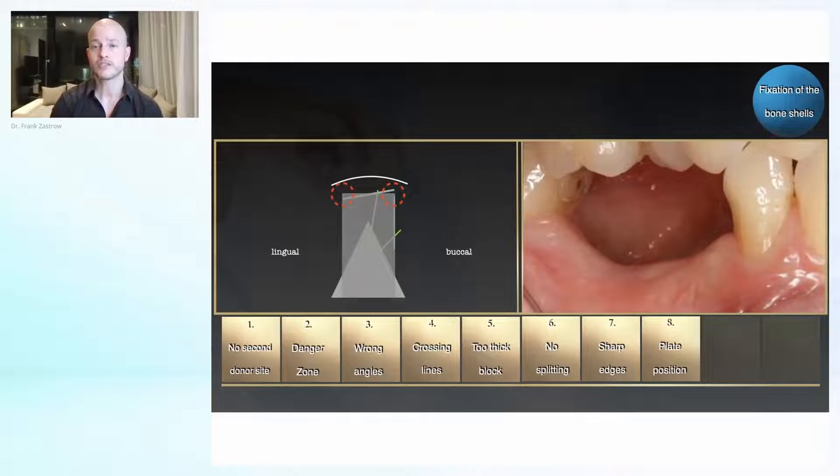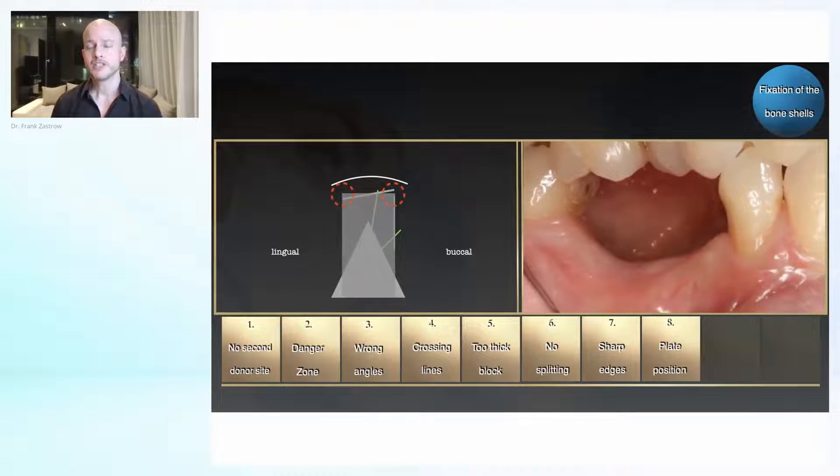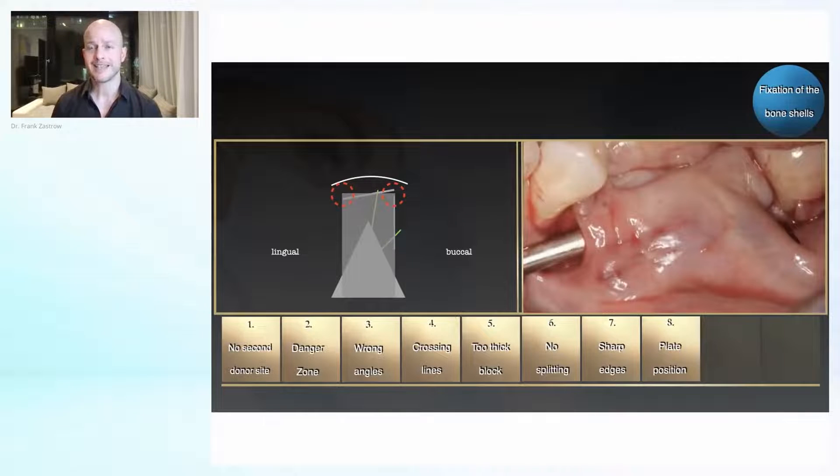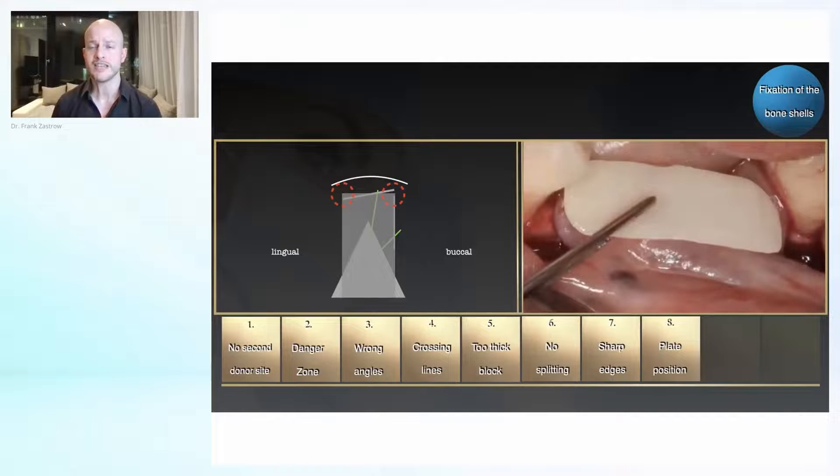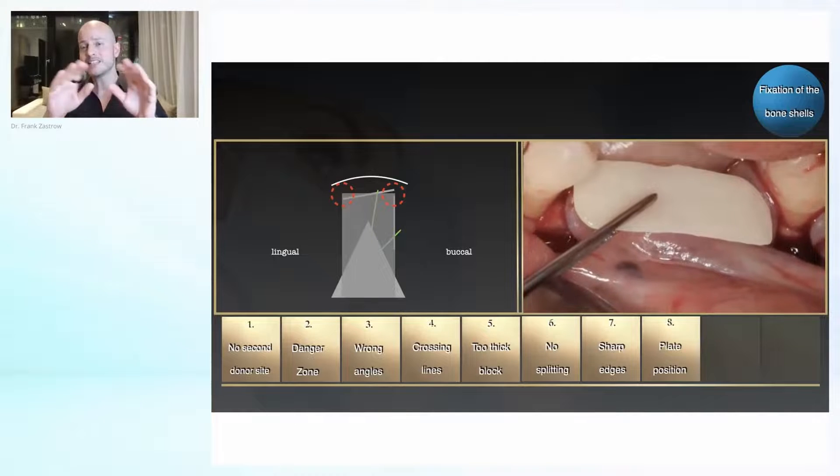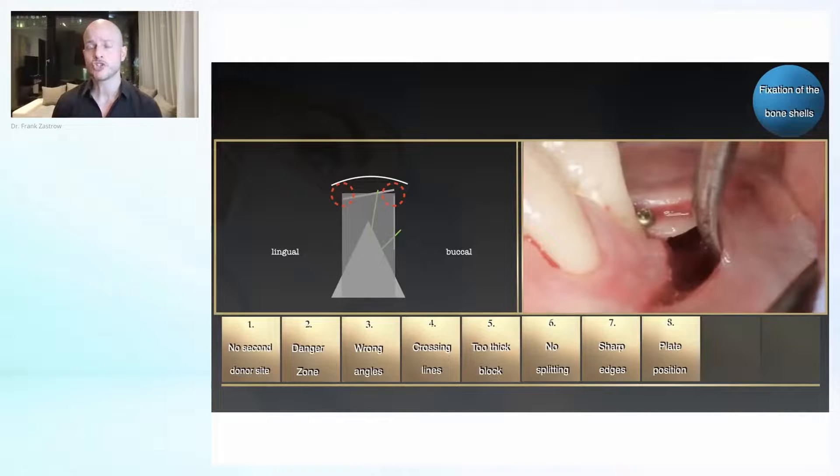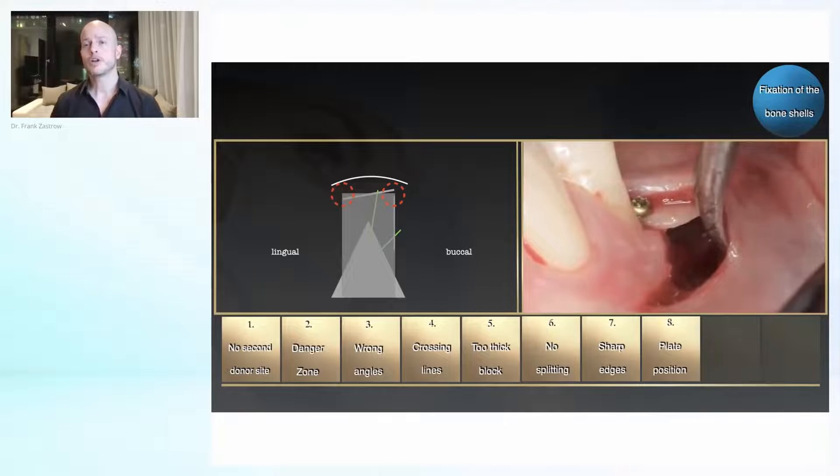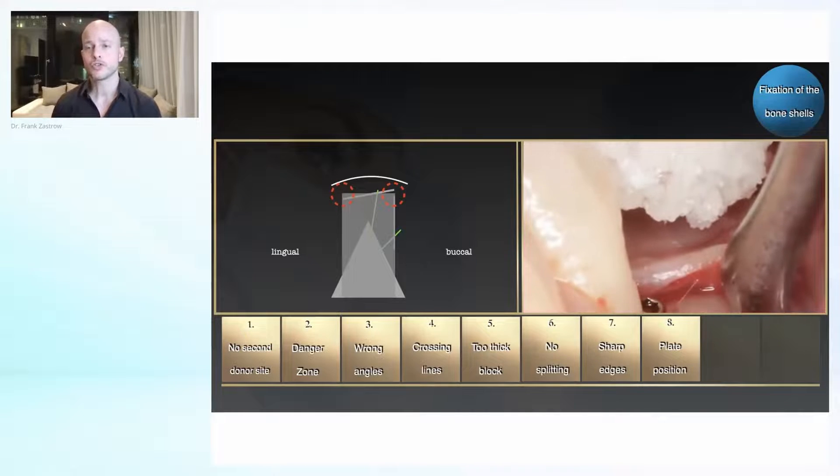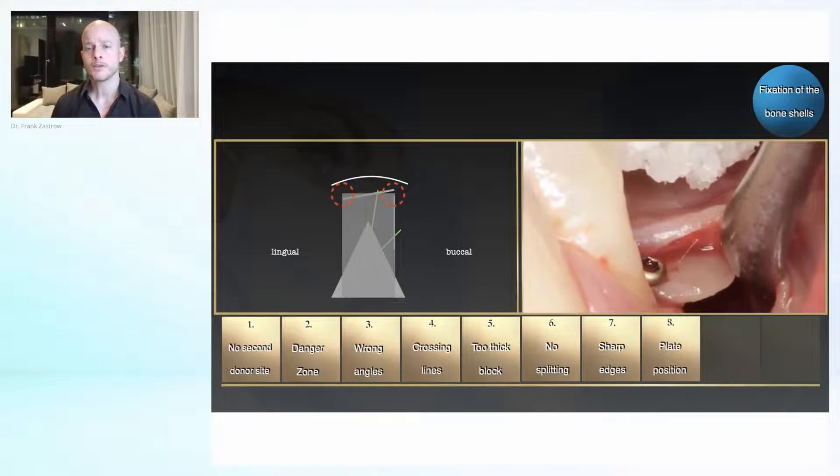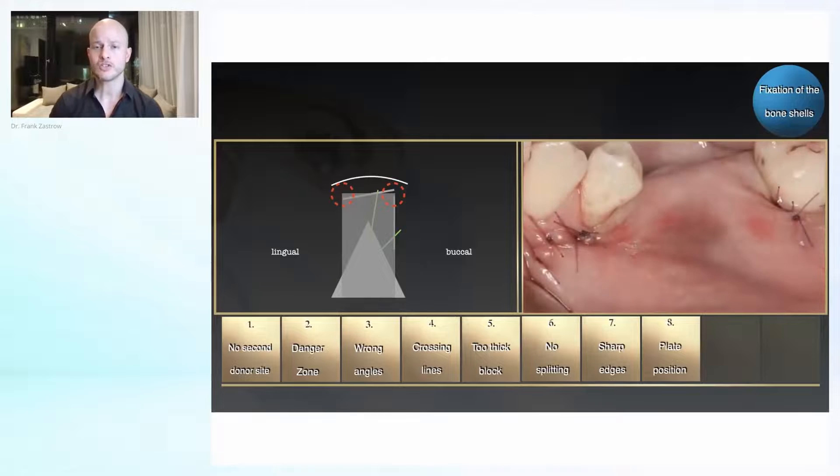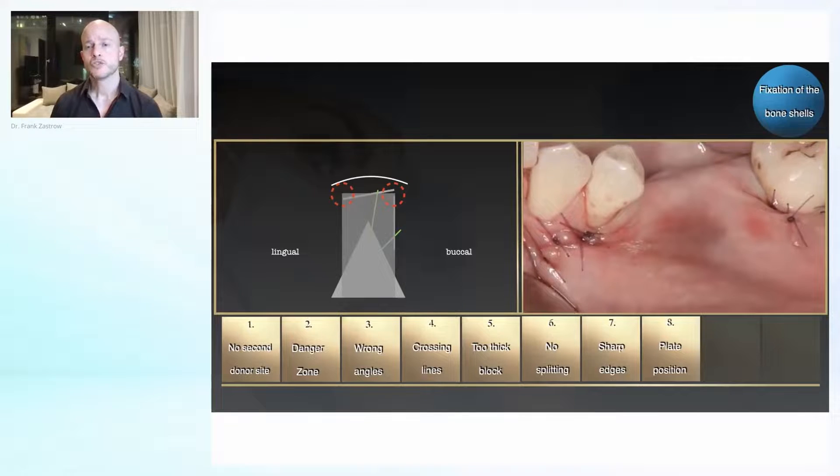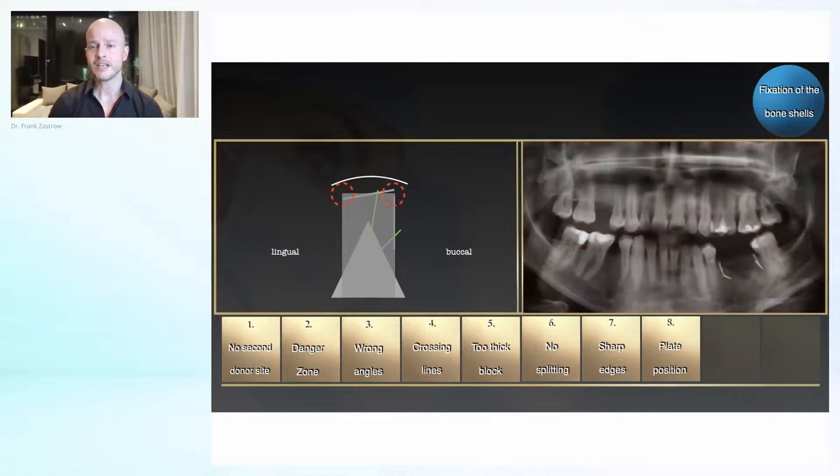You see here one case using a right angle technique with a tunnel technique. The plate is nicely rounded—all sharp edges are rounded off. This is one of our eight techniques we teach in our courses, and we fix them with the TMS screw system. You see here the result in the end.